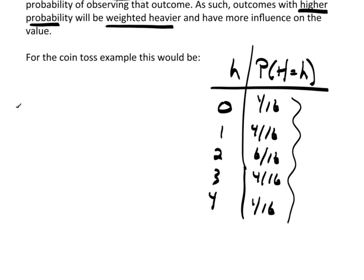Well, I'll rewrite this. The mean is equal to the sum, i equals 1 to 5. There's 5 possible outcomes.